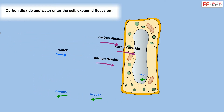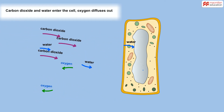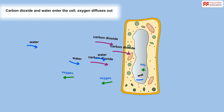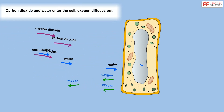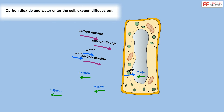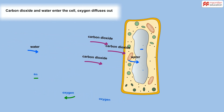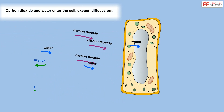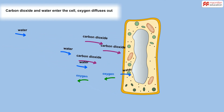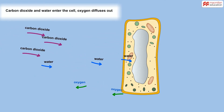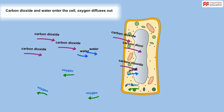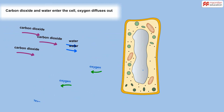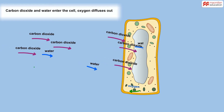Photosynthesis is the manufacture of sugar by the combination of carbon dioxide and water in the chlorophyll, using the energy from sunlight and with the release of oxygen. Sugar in the plants combines to form carbohydrates and fats, and they also combine with nitrates to form proteins.